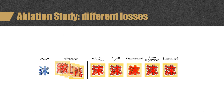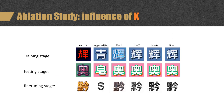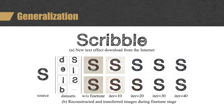Here is the ablation study, where we study the effect of different losses. This is another ablation study demonstrating the influence of keys at the training, testing, and fine-tuning stages. In this experiment, we verify the effectiveness of the fine-tuning strategy used to extend the pre-trained model to new effects. We download a new text effect from the internet and fine-tune the pre-trained model with a few iterations to support it.